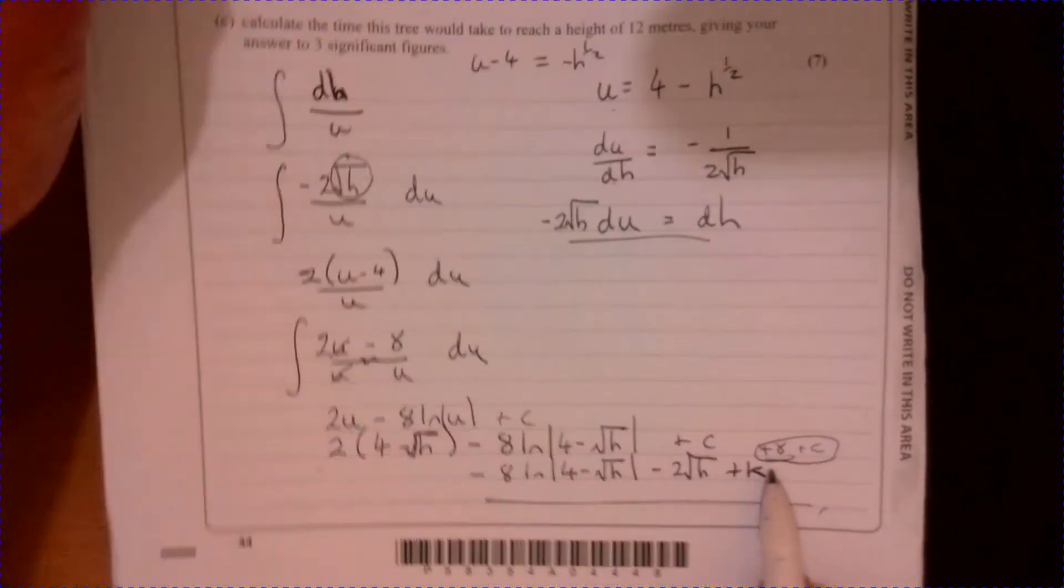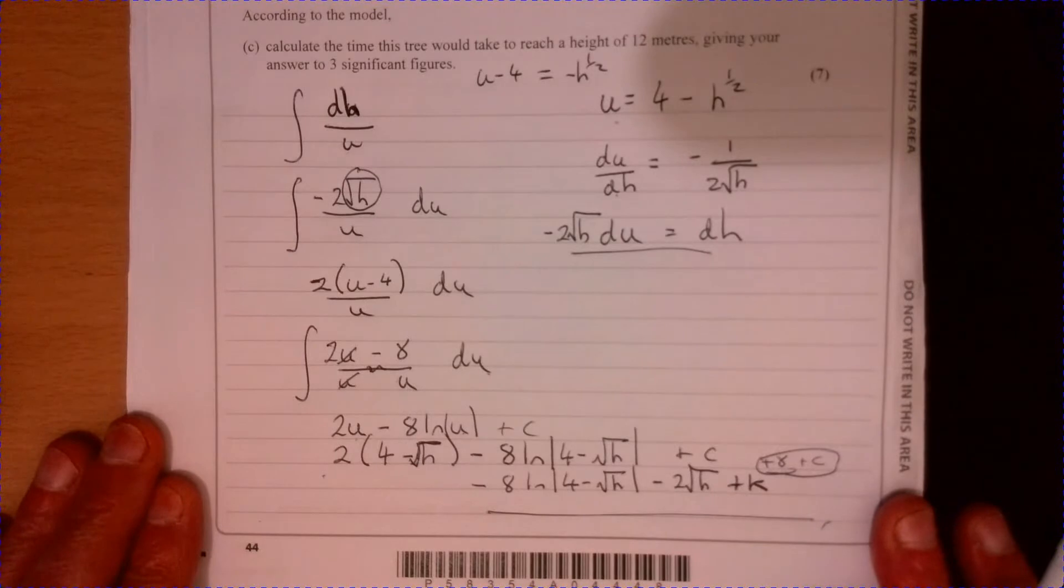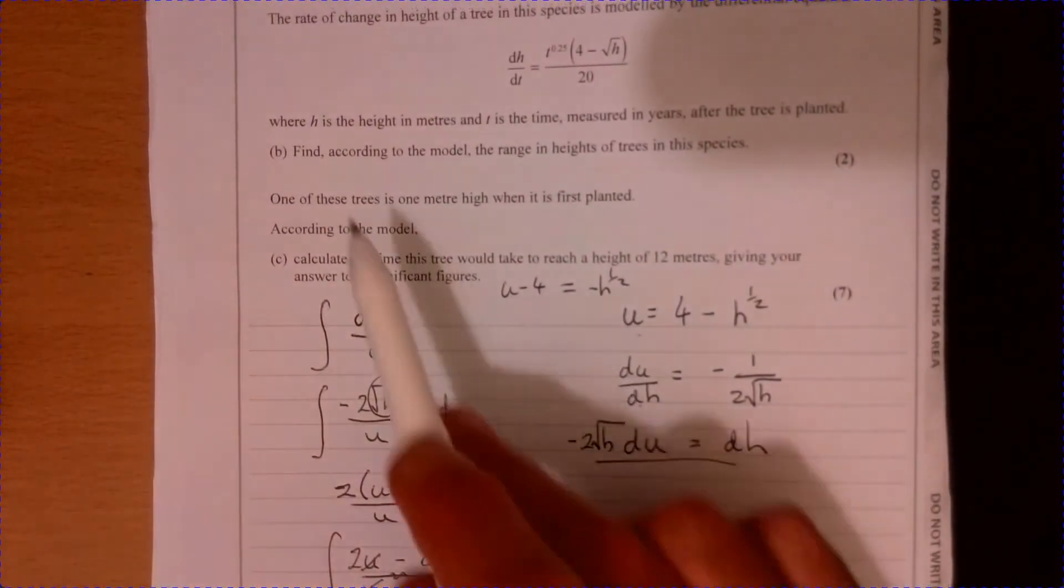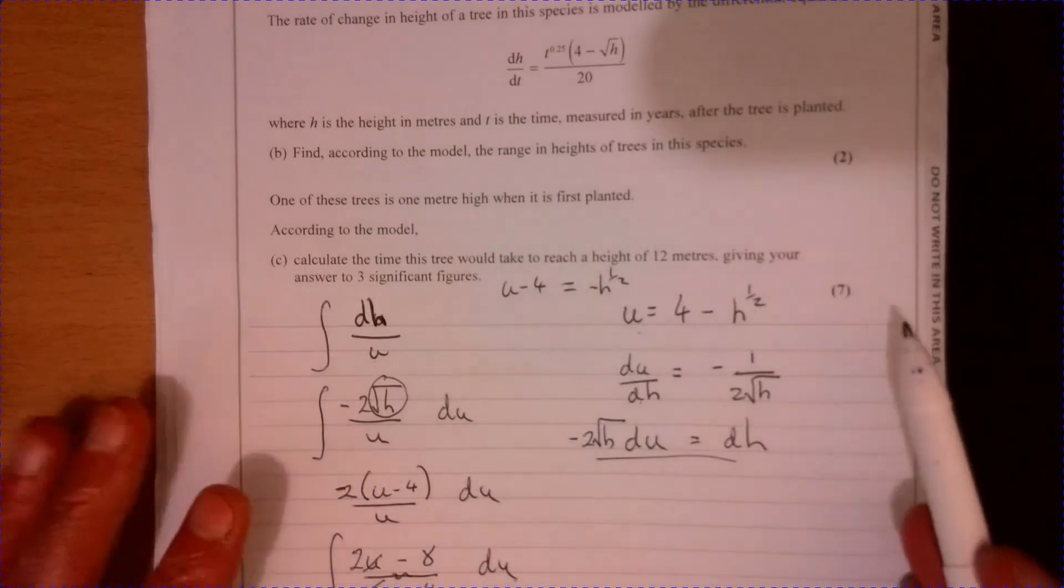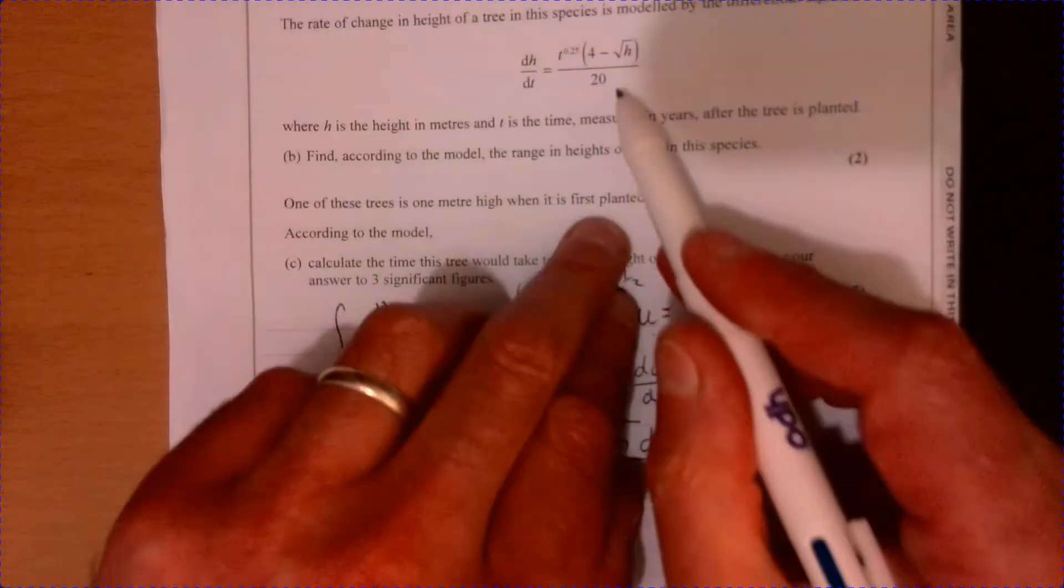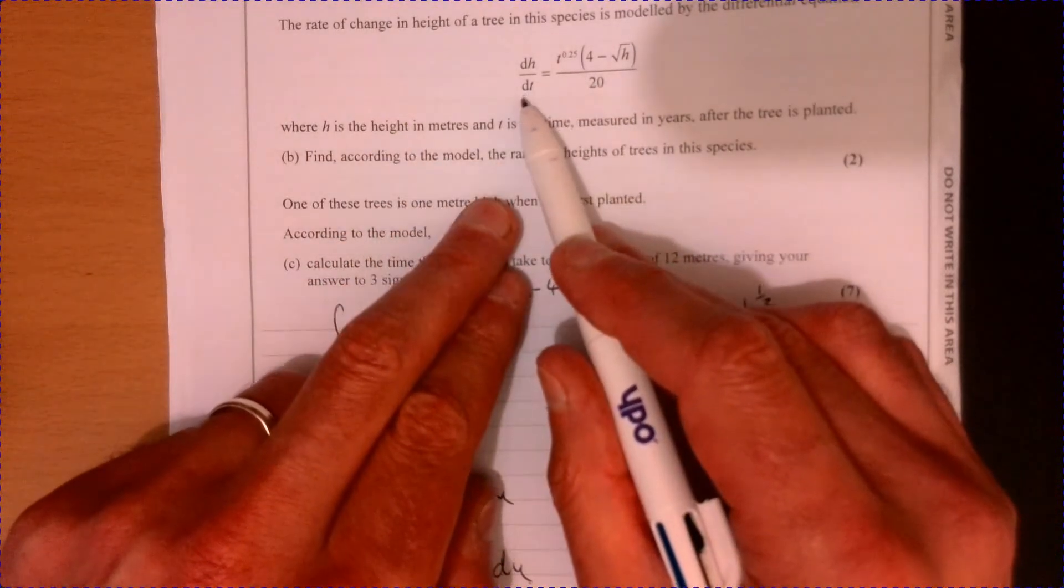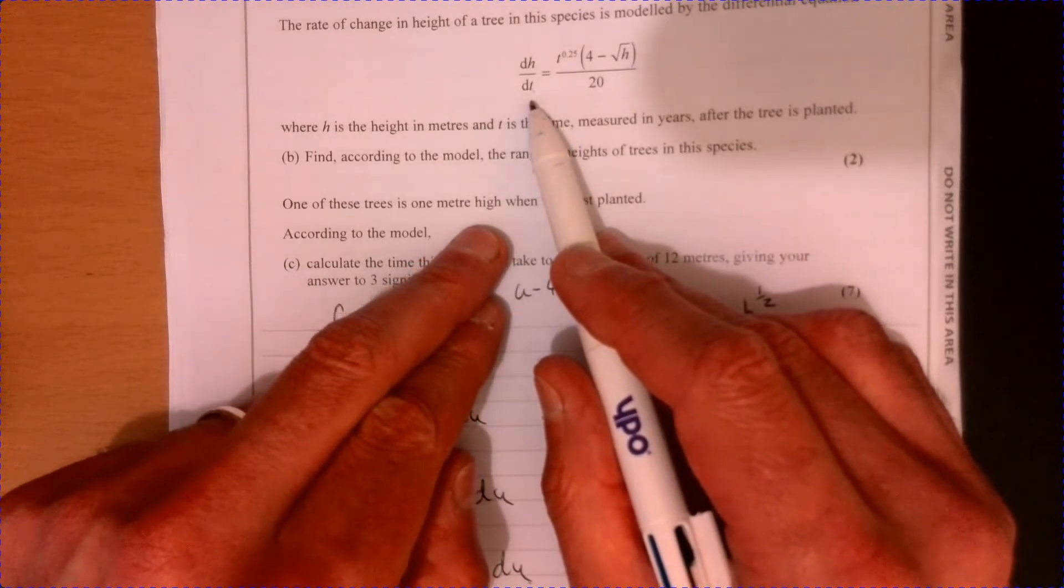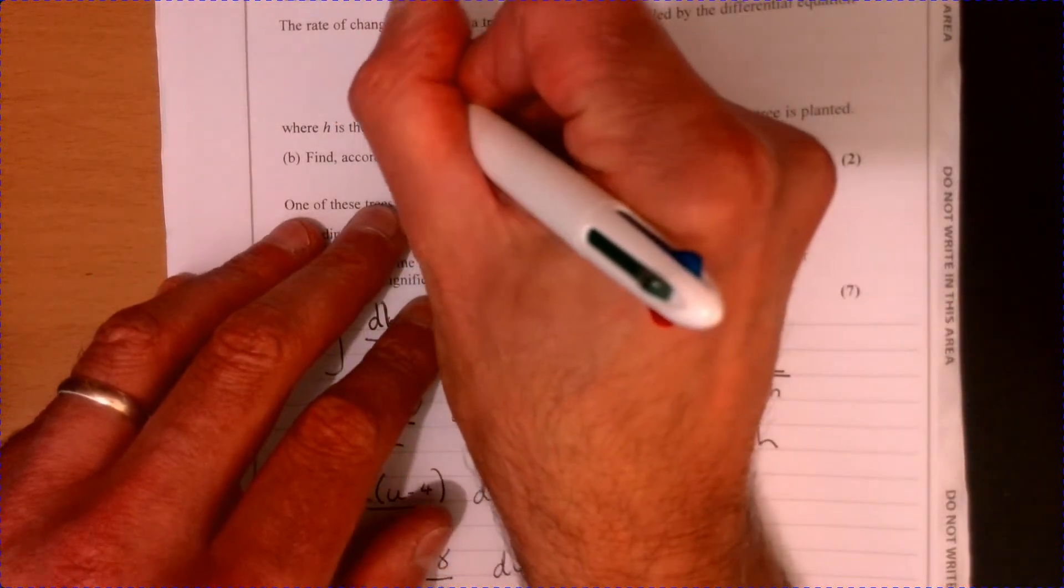Let's now go and have a look at part B and try and make sense of what that's actually asking. It says find according to the model the range of heights of trees in this species. I'm just going to solve this one because it's identifying the range of the heights. It's given me dH over dt. So if I can find the turning point of this, then that's going to be the maximum point.